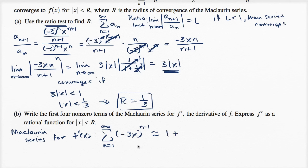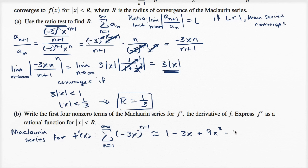When n is three, this is going to be negative three x squared, so negative three squared is nine, giving us nine x squared. Then the fourth term is negative three x to the four minus one power, so to the third power. Negative three to the third power is negative 27, times x to the third power. So there you have it — that's the first four non-zero terms of the Maclaurin series.